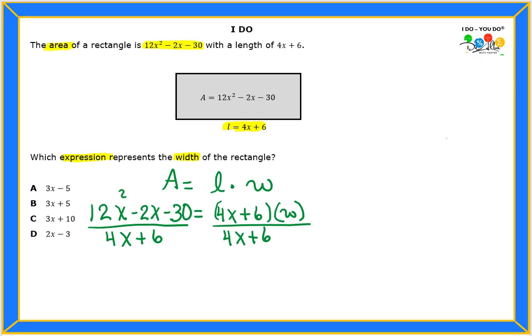And whatever you do on one side, do it to the other side. The 4x + 6 is going to cancel, and the width will be found when you divide those numbers. You've got to divide that area by that length.